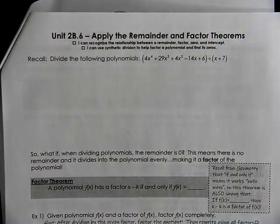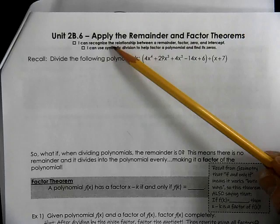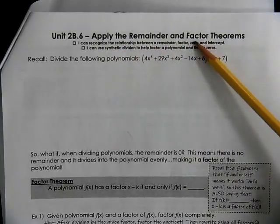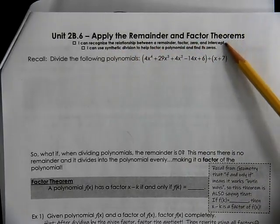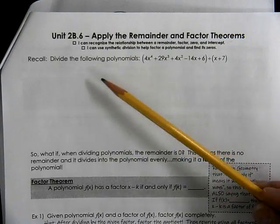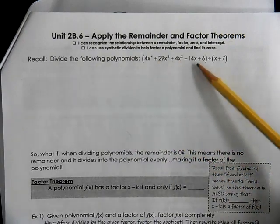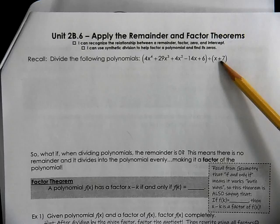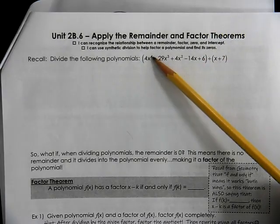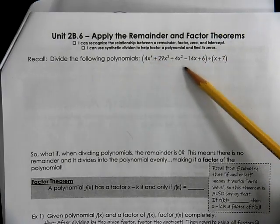This is Algebra 2 Trig Unit 28.6. We're going to apply the Remainder and Factor Theorems. What we're going to have a little reminder about is how we would divide this linear polynomial into this quartic polynomial.